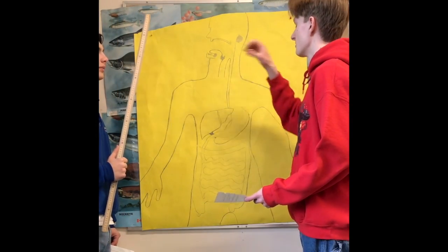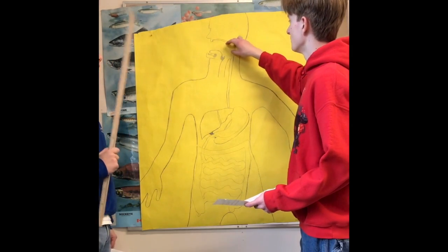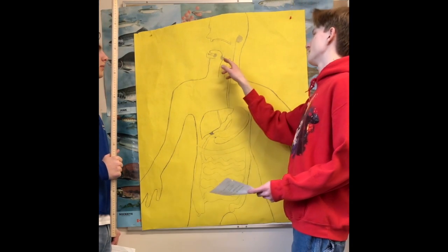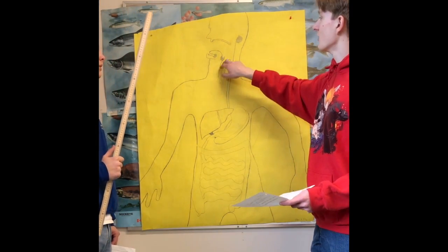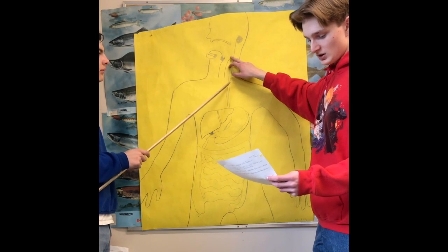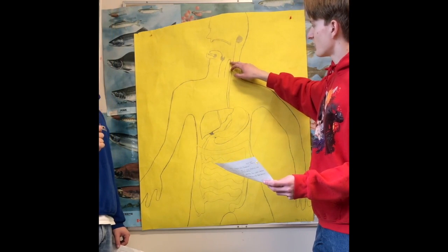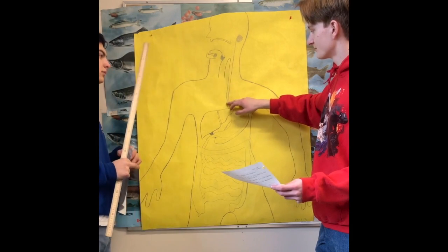From there it goes into the pharynx right about here. Since the trachea goes to the respiratory system, the food will be put into the esophagus right here. Using peristalsis, the esophagus pushes the food down all the way until here.